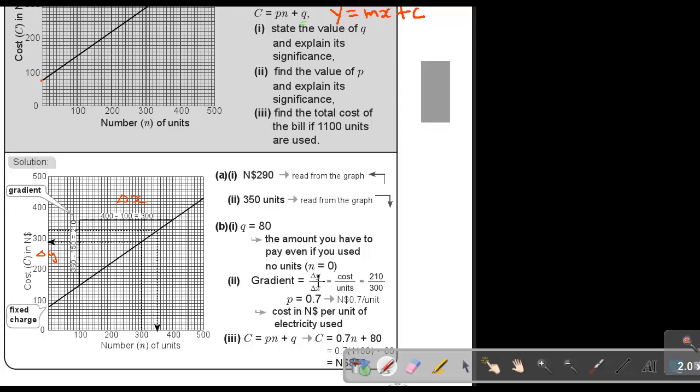And now, just to work out the gradient, so it's 210. Can you see that 210? Divide by this 300, and it's $0.7 per unit. What does it mean? It means that it's the cost in dollar per unit of electricity use. So for every unit you are going to use, you're going to pay 70 cent, or $0.7.